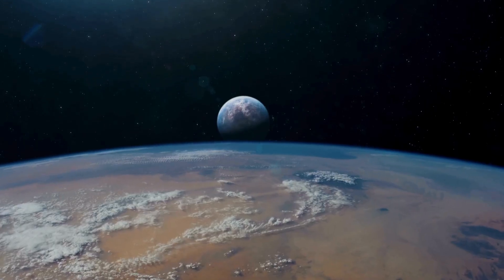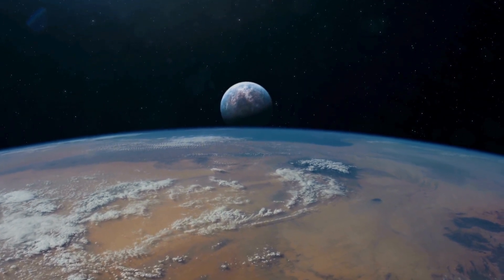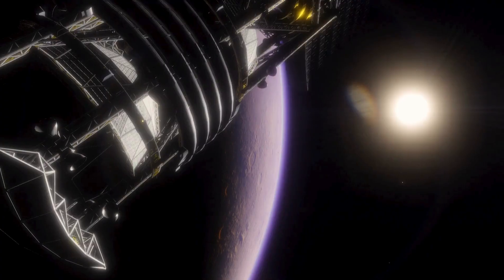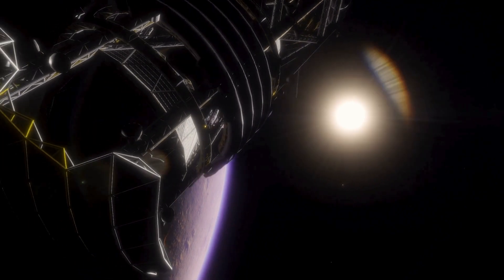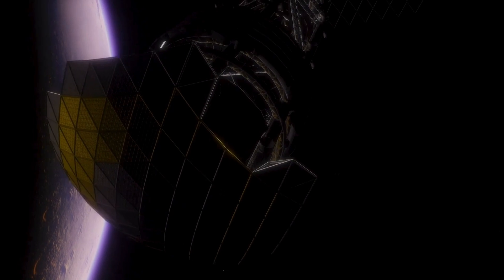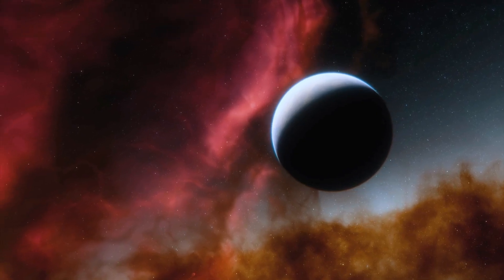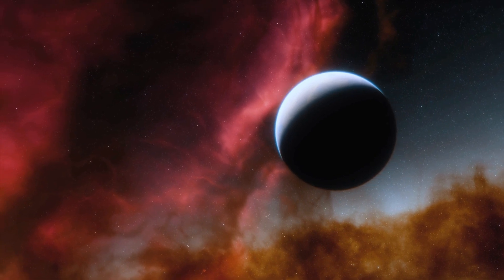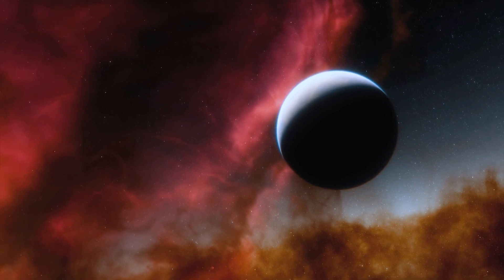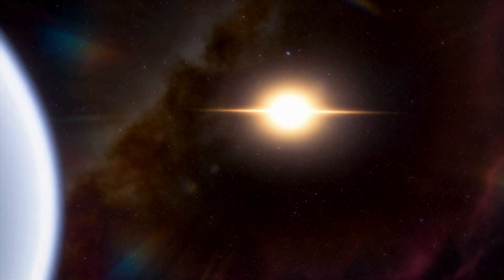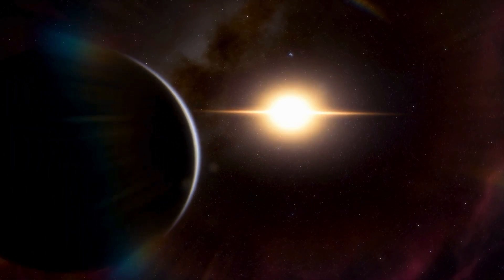But wait, there's more. Proxima Centauri b is not alone in its journey around the red dwarf star, it has a fellow traveler, Proxima Centauri c. And who knows what other secrets this star system holds. Perhaps another companion that we have yet to discover. Proxima Centauri b receives just about the same amount of energy from its star as our Earth does from the Sun. Could this mean that there's water on its surface, perhaps even life?